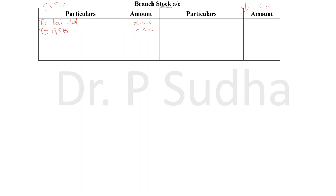If customers return goods, there may be sales returns. When customers return goods, the value of stock will increase because the goods come back into the business. So it has to be recorded in the debit side — to branch debtors account. This is goods returned by customers. Write the amount in the inner column.